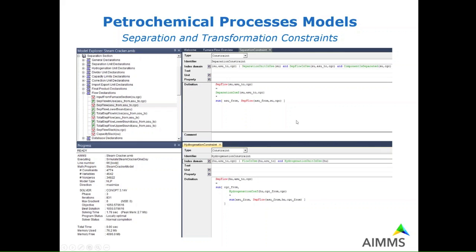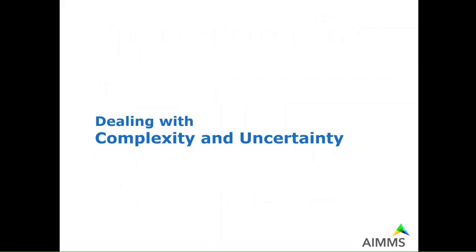Another type of unit in these models is a transformation unit, where you get some components in and there is a chemical process — like a hydrogenation process — and a number of components go out. In a similar way we can formulate this kind of constraint. So we've seen some examples of network models and how to handle model building in AIMMS in different situations. Next we would like to discuss how to deal with complexity and uncertainty in these kinds of models.